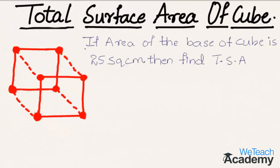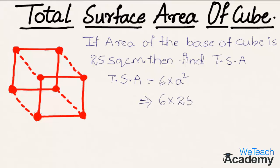Here is another example: if the area of the base of a cube is 25 square centimeters, find the total surface area. The formula is 6a², where a² is the area of the base. Substituting, we get 6 × 25 = 150 square centimeters as the total surface area.